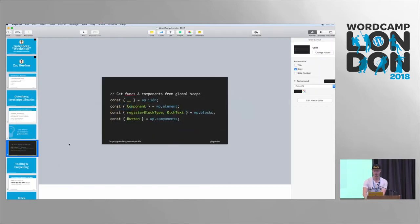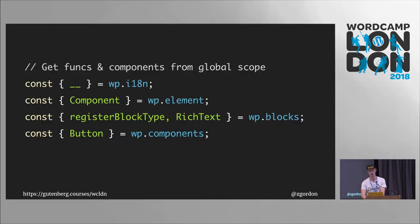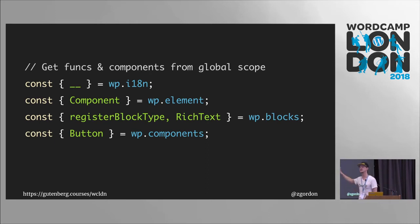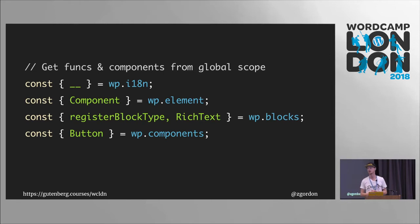We probably don't want to be writing all of this in super long format, so we use something called destructuring. This allows you to take something like WP.Element.Component and just refer to it as Component by itself. So at the top of most Gutenberg files, you'll see something like this, where we pull out everything we need so we can refer to it by shorthand. You could write WP.blocks.richText every time if you wanted to, but I'd suggest following the conventions of the core devs.